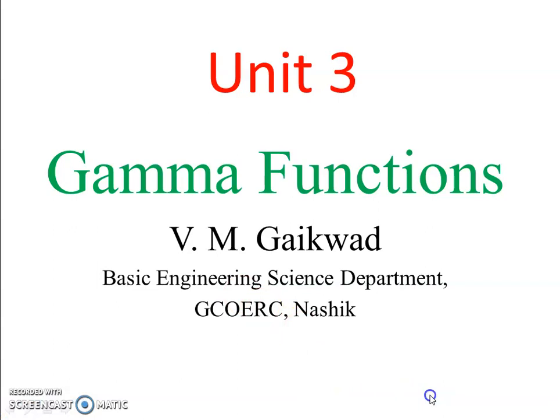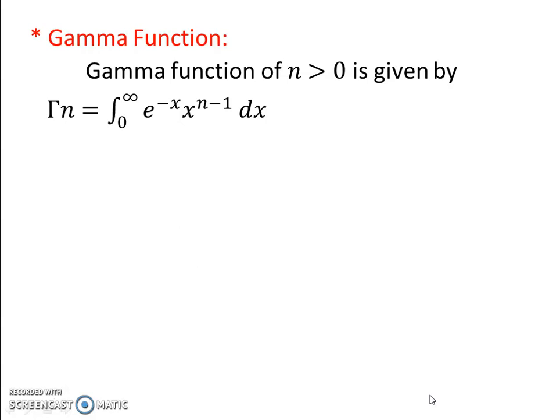First we will look at the definition of the gamma function. The gamma function is defined for a positive value of n. The definition is: for n greater than zero, Γ(n) = ∫₀^∞ e^(−x) · x^(n−1) dx. If you look at the right-hand side of this definition, it clearly depends on e^(−x) and x^(n−1), with limits from 0 to infinity.